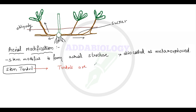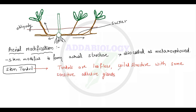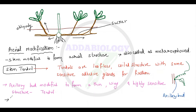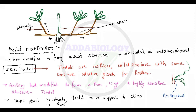The first aerial modification is stem tendrils. Tendrils are leafless, coiled structures with sensitive adhesive glands for fixation. The axillary bud modifies to form a thin, wiry, highly sensitive structure called a tendril — which is spring-like in shape. Tendrils help the plant attach itself to another plant so it can grow toward sunlight, because the stem of the actual plant is very weak.